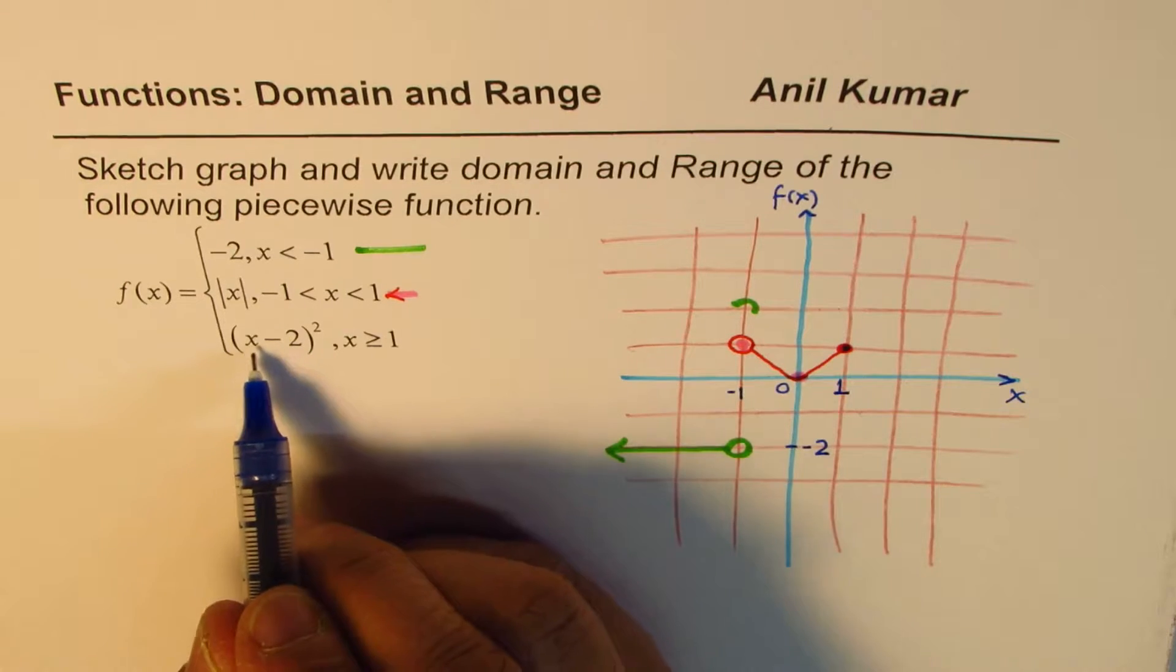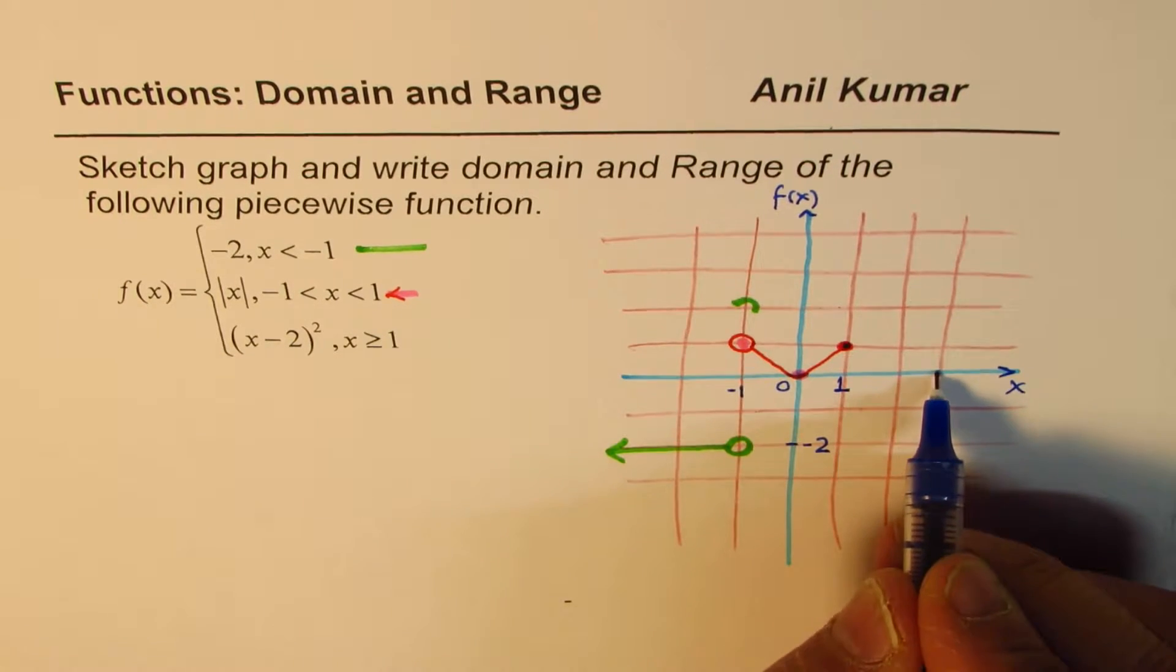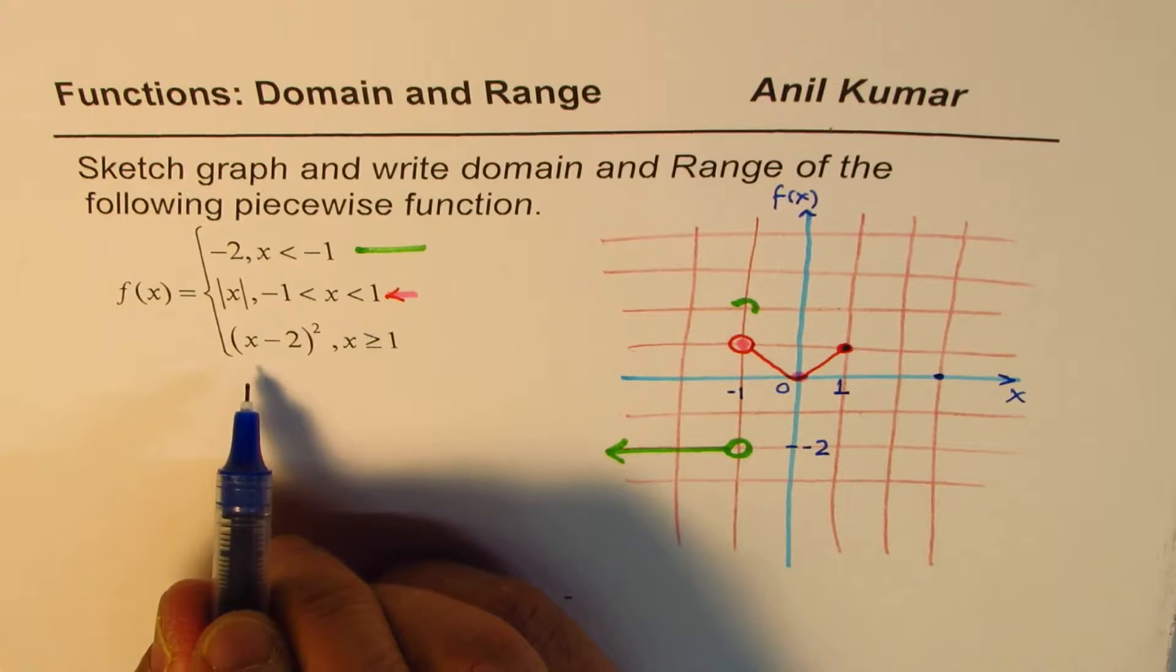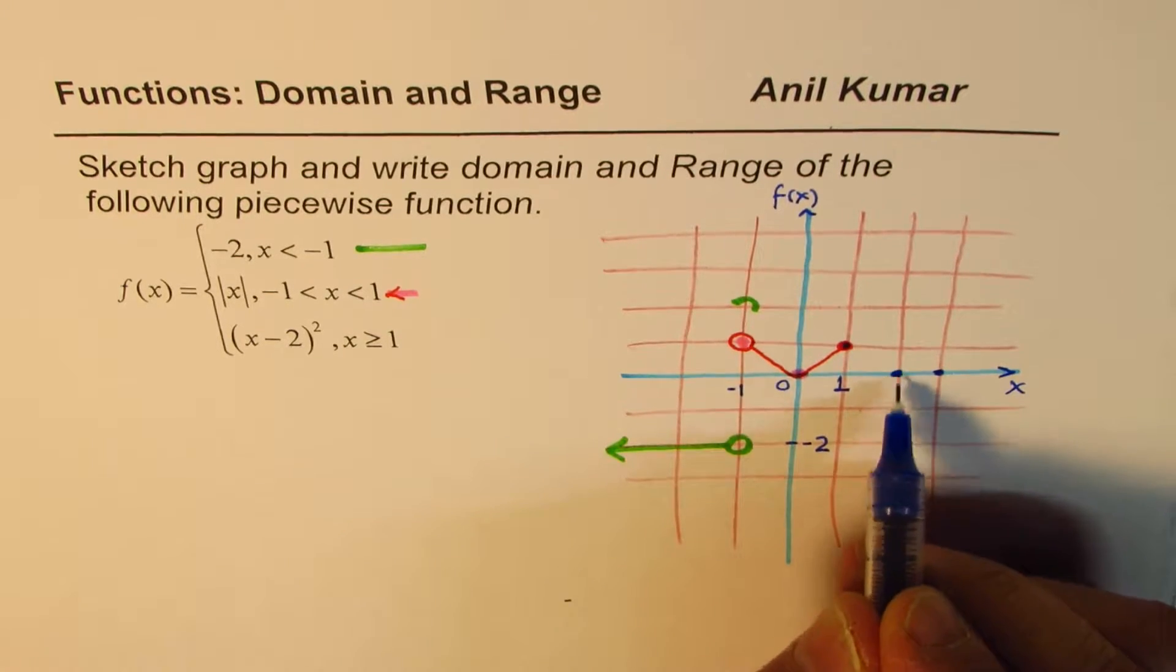And if I write 2, we know 2 minus 2 is 0. So 2 minus 2 is 0. In between, 2 is this place, 2 is this place.